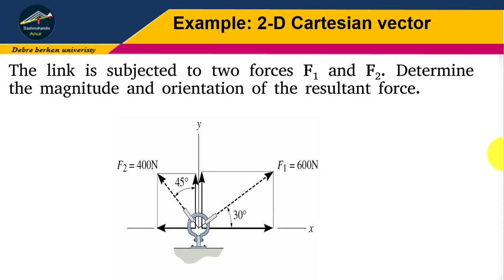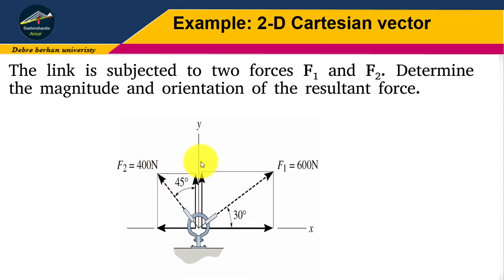Before going directly to the solution, I would like to explain the concept behind resultant force. The question states that a link is subjected to two forces, F1 and F2. F1 is oriented 30 degrees from the positive x-axis and F2 is oriented at 45 degrees from the positive y-axis. We need to determine the magnitude and orientation of the resultant force.